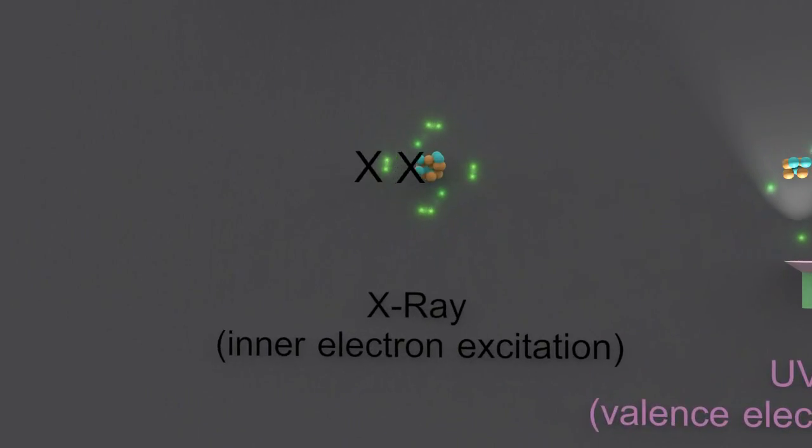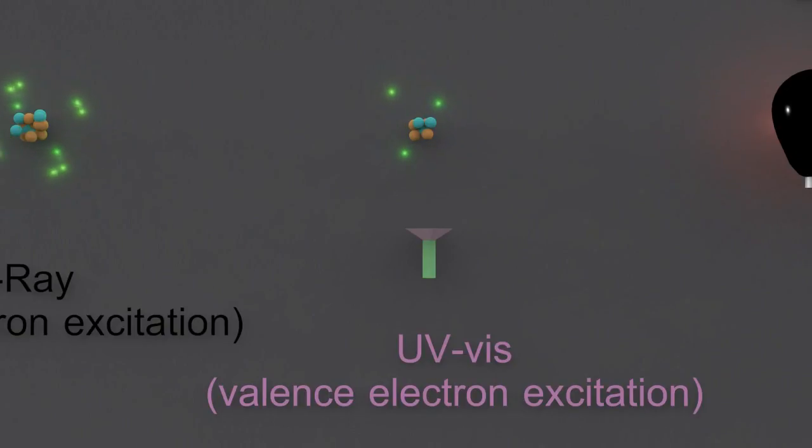Starting with x-rays, they have so much energy they can excite the inner electrons of an atom to a higher energy level, and from there the electrons will jump back down again and release those x-rays, giving information about those inner electron energy levels.